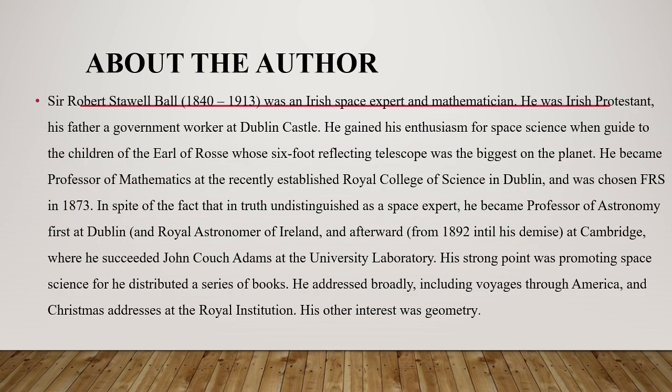Sir Robert Stawell Ball (1840–1913) was an Irish astronomer and mathematician. He was Irish Protestant; his father was a government worker at Dublin Castle. He gained his enthusiasm for astronomy when he received guidance from Lord Rosse, whose six-foot reflecting telescope was the biggest on the planet. He became professor of mathematics at the newly established Royal College of Science in Dublin.